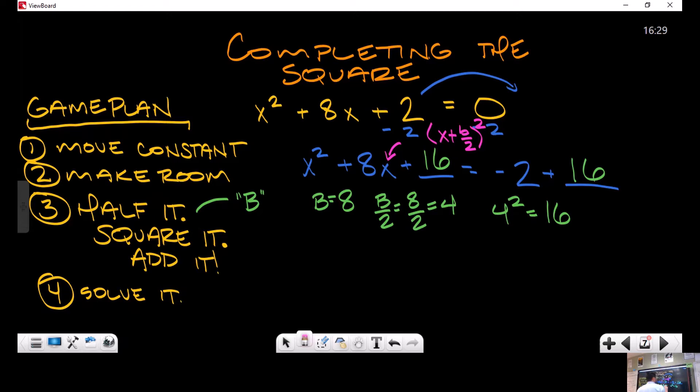We've created a perfect square here. That perfect square will be, in this case, x plus b/2 - and b/2 is 4 - so (x + 4)² equals what's -2 + 16? 14. For this problem we have got this in a state where we can actually solve it now.